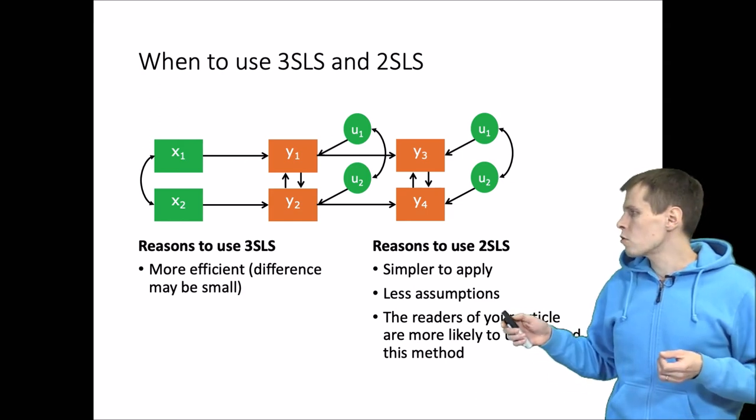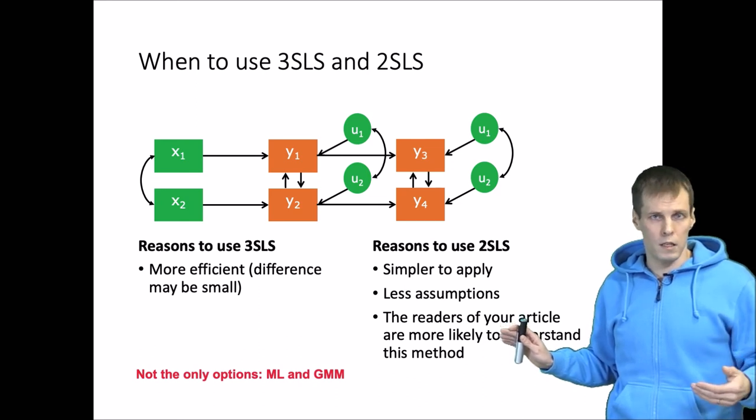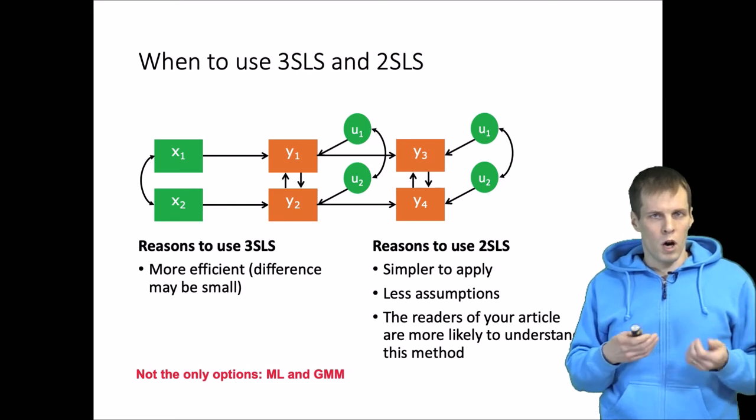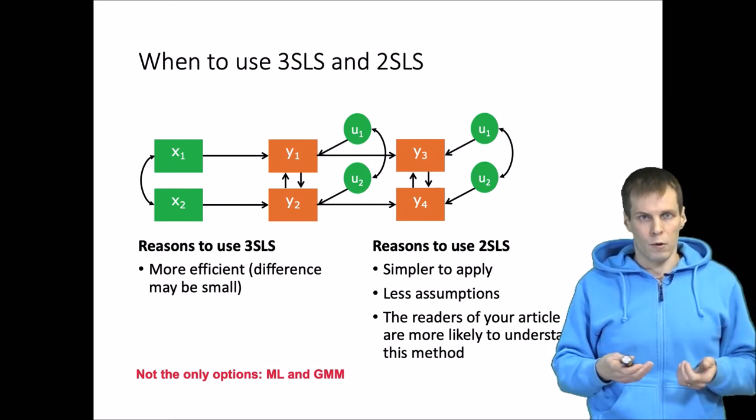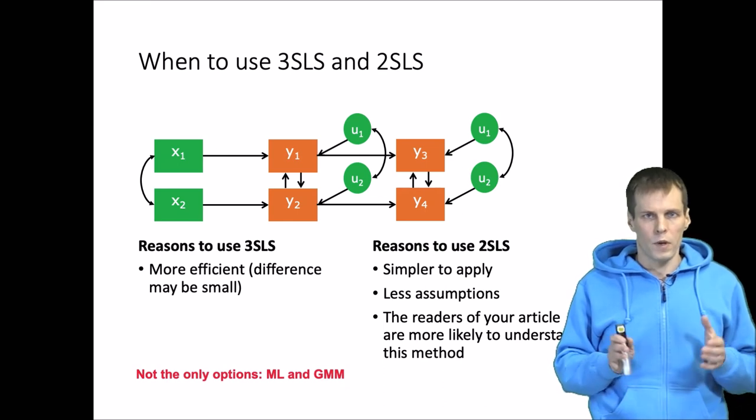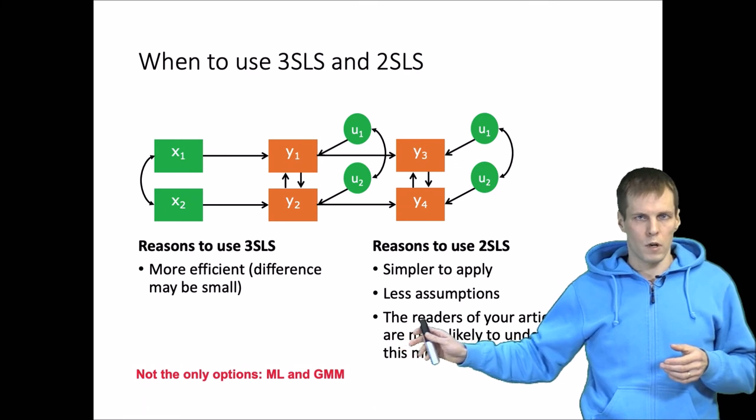You need to consider that these two are not the only options. We also have maximum likelihood estimation and generalized method of moments, which are more modern techniques than, for example, three-stage least squares. I personally consider three-stage least squares to be a largely obsolete technique and I would use GMM or maximum likelihood instead.